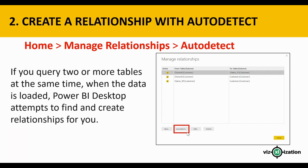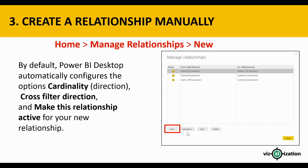To create a relationship manually, go to Home > Manage Relationships > New. This is a screenshot where we can start creating our own relationship. By default, Power BI Desktop automatically configures the options — cardinality, cross filter direction, and make this relationship active — for your new relationship.